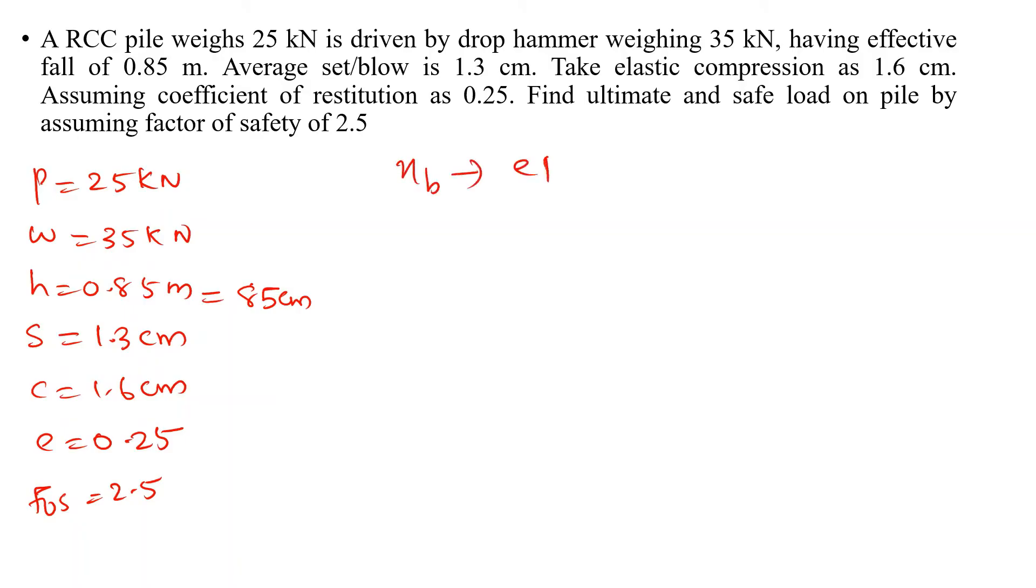P equals 25 kN, W equals 35 kN, h equals 0.85 meters equals 85 cm, s equals 1.3 cm, c equals 1.6 cm, e equals 0.25. e times P equals 0.25 times 25 equals 6.25. That is less than W. For this equation, efficiency is (W + e²P)/(W + P). The efficiency of blow is 0.6909.